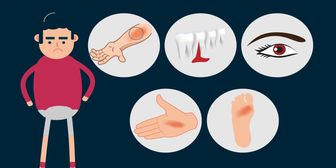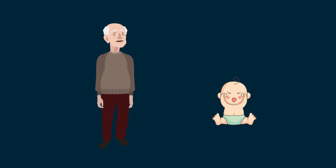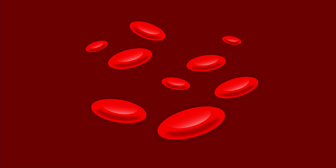Dengue is a life-threatening disease that can affect anyone, though people with weak immune systems are more prone. An important symptom is a reduced platelet count in the blood, and the disease becomes deadly if the blood composition is severely affected.